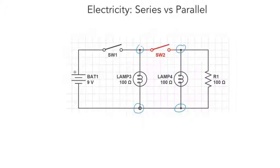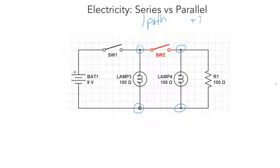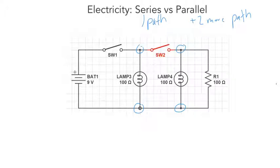In summary: in a series circuit there is only one path for electrons to go, whereas in a parallel circuit there are two or more paths. In our next video we're going to be looking at the dynamic electricity symbols so we understand what each one means. Hope this helps, and have a great day.